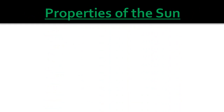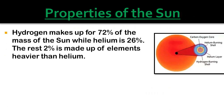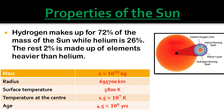Now let's study the properties of the Sun. Alongside you can observe a diagram of the Sun showing a helium-bearing shell, a hydrogen-burning shell, and a carbon-oxygen core. Hydrogen makes up 72 percent of the mass of the Sun, helium is 26 percent, and the remaining 2 percent consists of elements heavier than helium.